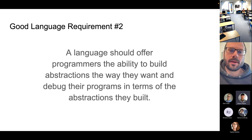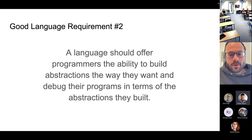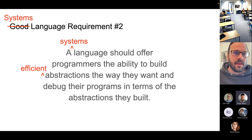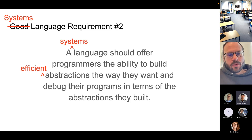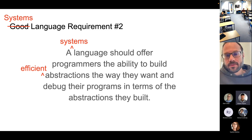A language should allow programmers to build abstractions the way they want and to debug their programs in terms of those abstractions — not in terms of memory corruption. The systems addendum is that those abstractions need to be efficient. We should keep the ability to debug at the level of the abstractions written, not have to debug in terms of the machine.